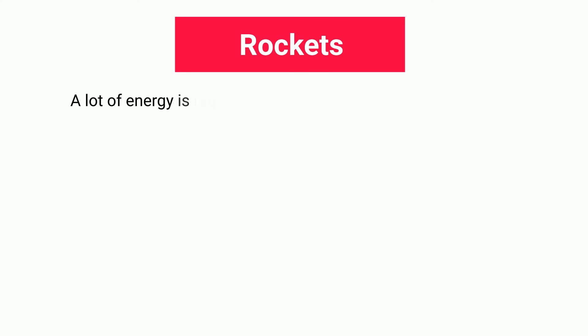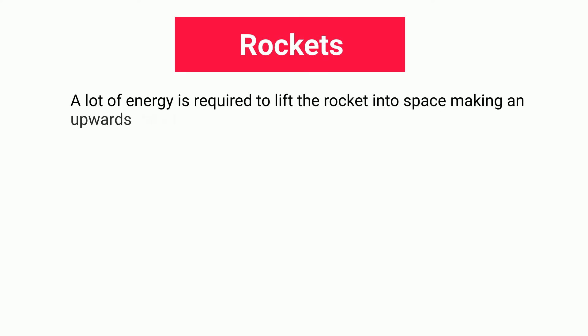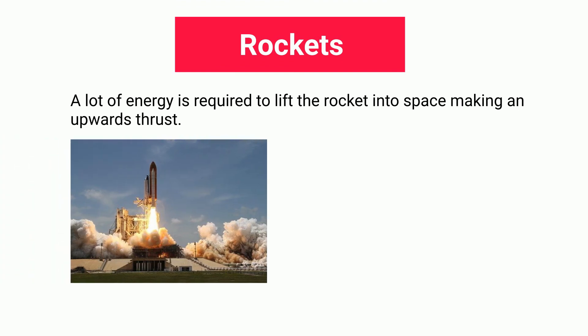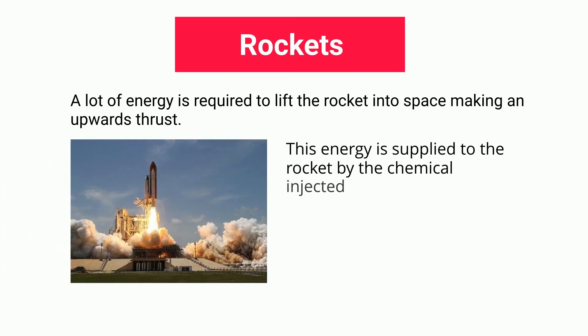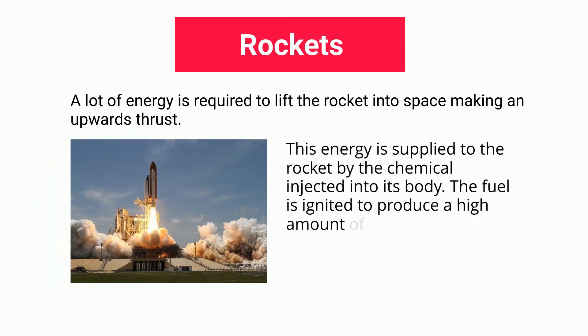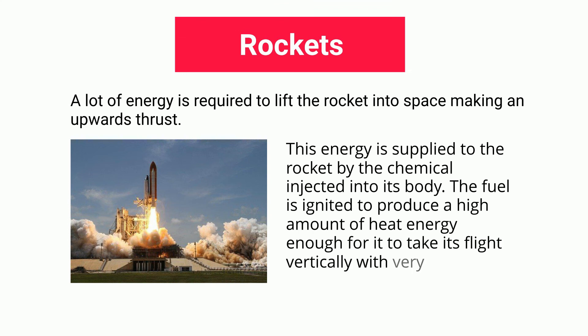Rockets: a lot of energy is required to lift a rocket into space, making an upward thrust. This energy is supplied to the rocket by the chemical fuel injected into its body. The fuel is ignited to produce a high amount of heat energy, enough for the rocket to take flight vertically at very high speed.